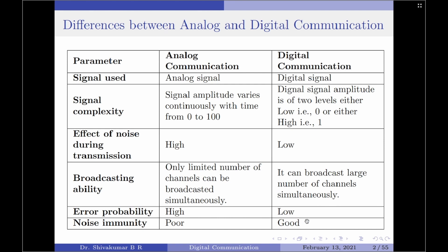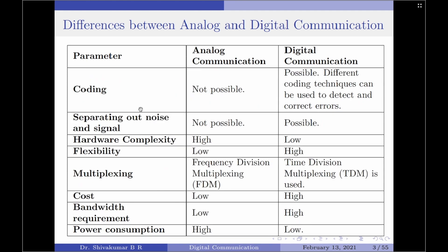Since digital communication has a low error probability, it has good noise immunity. The next parameter is coding. Coding will be highly helpful in representing data before transmission. In analog communication, coding is not possible or can be considered considerably complex.